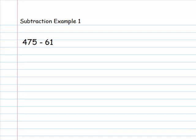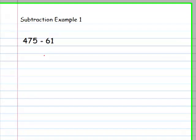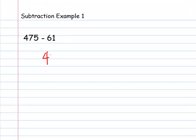Our first subtraction example: 475 minus 61. Let's write that vertically — 475 minus 61 — lining up the place values.